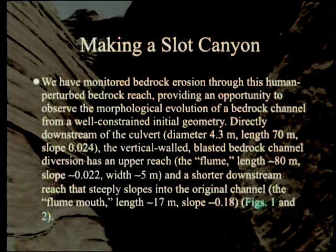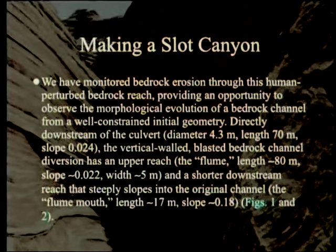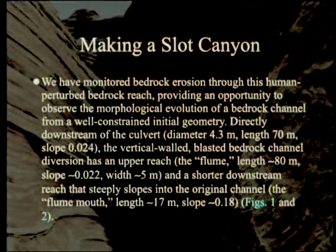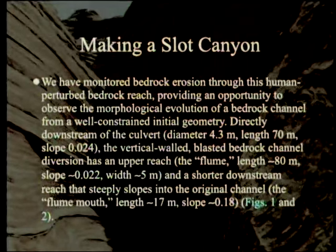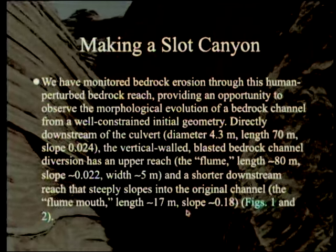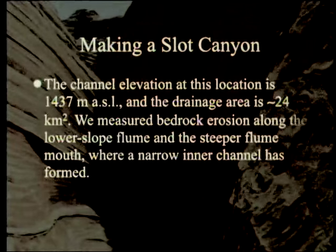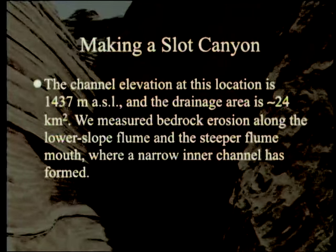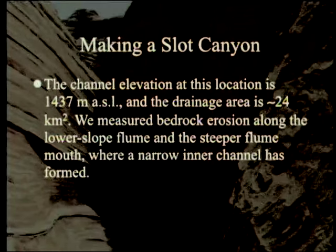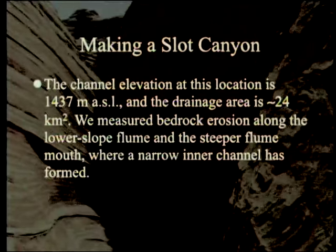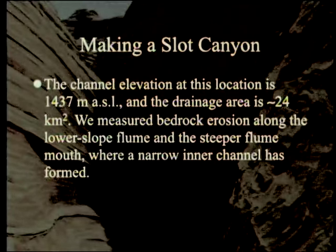There's also a shorter downstream reach that slopes steeply into the original channel — the flume mouth — with a slope of 18%, much steeper, and a length of about 17 meters. The channel elevation at this location is approximately 1,400 meters above sea level, and the drainage area is approximately 24 square kilometers, about 10 square miles.